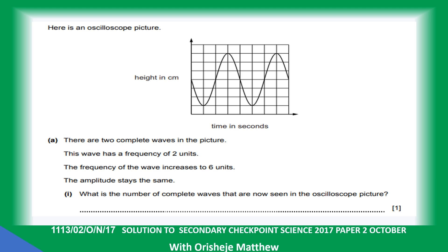What is the number of complete waves now seen in the oscilloscope picture? One complete wave cycle is one unit. Two complete cycles equals two units of frequency. The number of complete circles per second equals the frequency of the wave. So the frequency was two hertz. If the frequency increases to six hertz, that means there are six complete waves in one second.